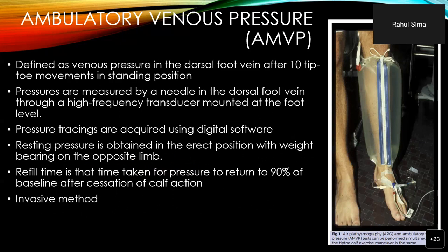Ambulatory venous pressure is defined as the venous pressure in the dorsal foot vein after 10 tiptoe movements in the standing position. Pressures are measured by a needle inserted in the dorsal foot vein through a high-frequency transducer mounted at the foot level, and pressure tracings are acquired using digital software. Resting pressure is obtained in the erect position with the weight bearing on the opposite limb. Refill time is the time taken for the pressure to return to 90% of the baseline after cessation of calf action.